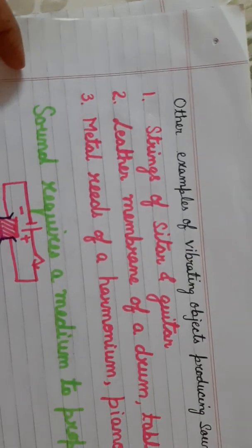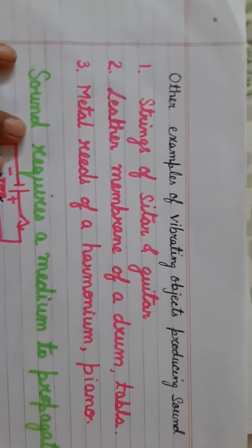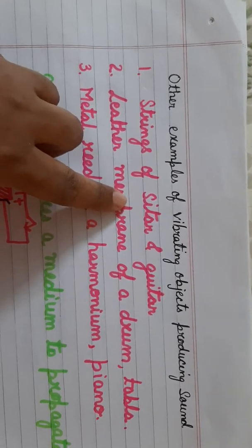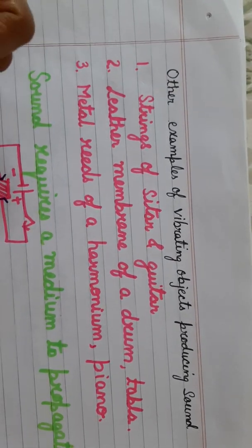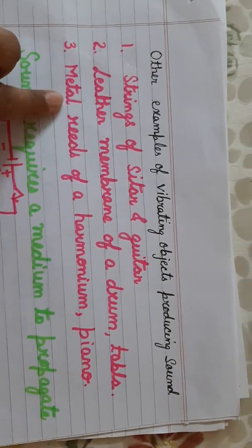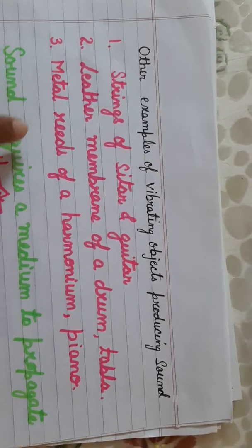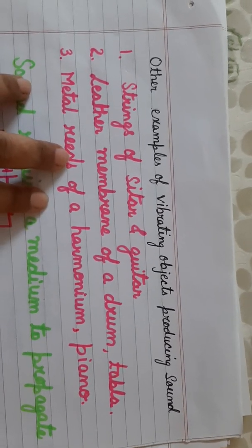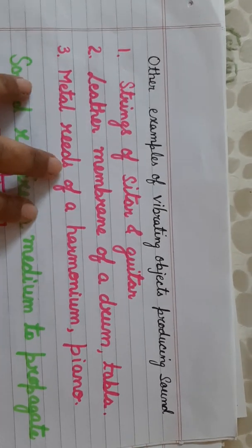Now in our day-to-day life, we come across so many examples. We know different musical instruments — stringed instruments, leather membrane instruments, instruments like the harmonium and the piano. In all these different types of musical instruments, the strings vibrate in a sitar and a guitar, the leather membrane vibrates in a drum and a tabla, and the metal reeds vibrate in a harmonium and piano. So sound is produced as a result of vibration in an object.